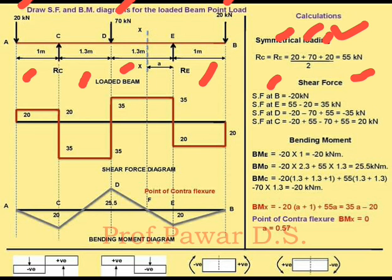After getting the reactions, the next thing is to calculate the shear forces. We are going to start from the right. The shear force at point B is 20kN, and from this point we calculate the shear forces.